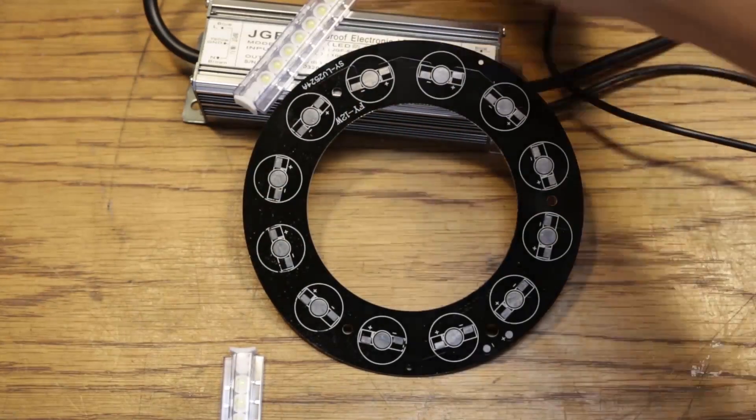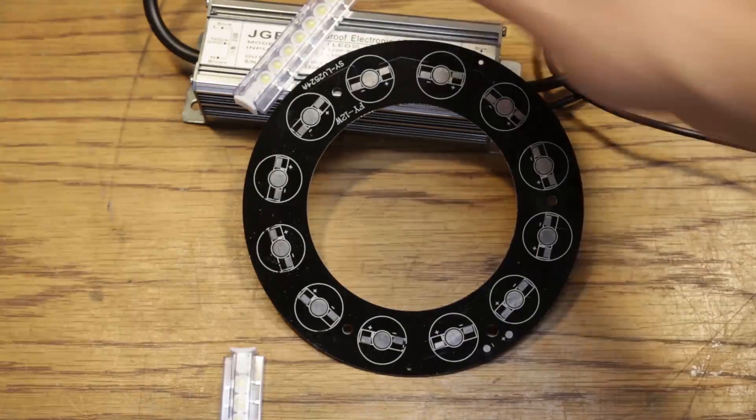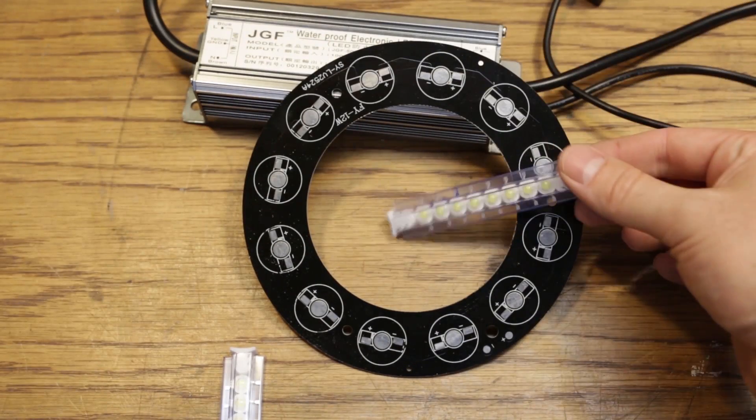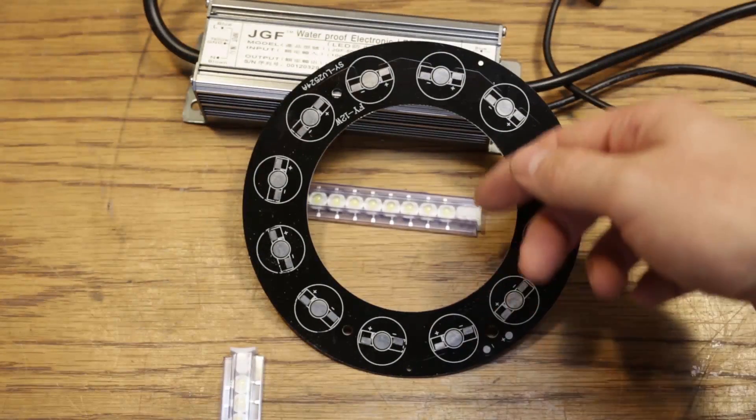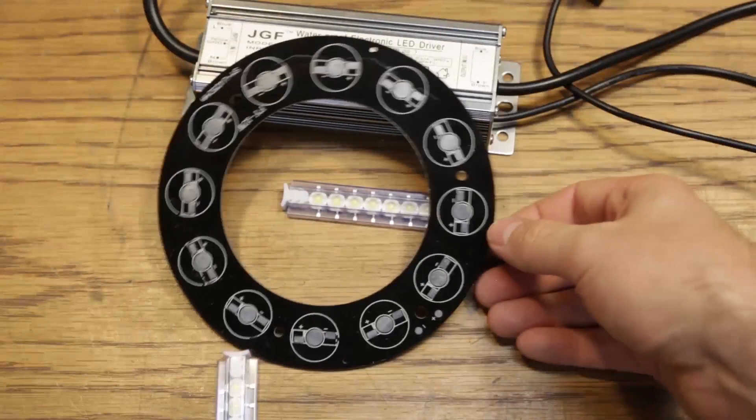And these LEDs I think are specced at around 200 lumens a piece, 180 to 200 lumens when driven properly with this guy. So 12 of those, so we're going to see somewhere around 2400 lumens out of this whole setup which should be plenty for the ring light.